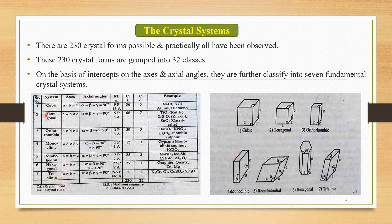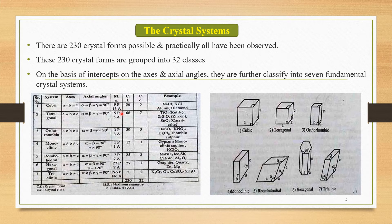The first crystal system is the cubic system. This system has axis intercepts a = b = c and axial angles α = β = γ = 90°. It has a maximum symmetry of 9 planes of symmetry, 13 axes of symmetry, 36 crystal forms, and 5 crystal classes. Important examples of the cubic system are NaCl, KCl, alums, and diamond.